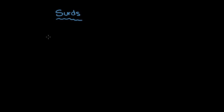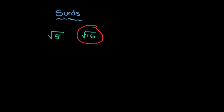A SIRD is a number that is generally under what we call a root sign or a radical sign. This can get a little bit confusing because I'm going to write two different numbers here — basically one is a SIRD and one is not a SIRD. Hopefully you figure out that the square root of 16 is not a SIRD.